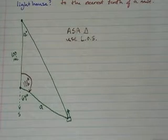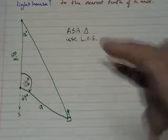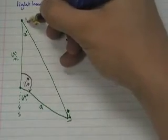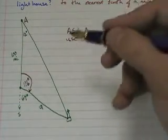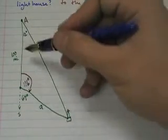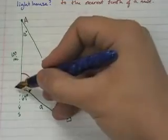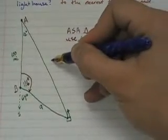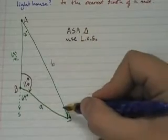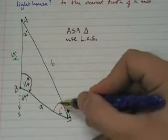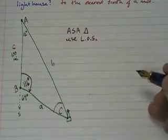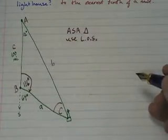So, I have an angle, side, angle triangle. I want to use the law of sines. This is side A. If this is side A, this has to be angle A. If this is angle A, then just for simplicity's sake, I'm going to call this angle B, which makes this side B. And then I'm going to call this angle C, which makes this side C. Now I have everything labeled.